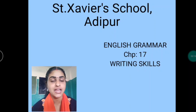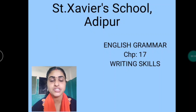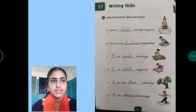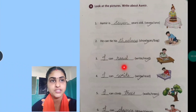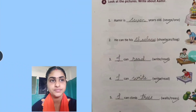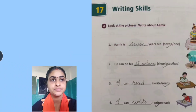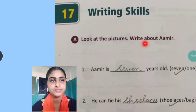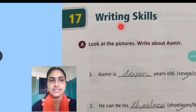This is your second last chapter for the semester. So take out chapter number 17, writing skills. Here is your chapter: writing skills.